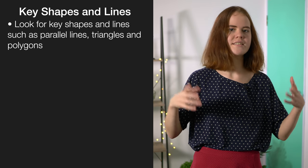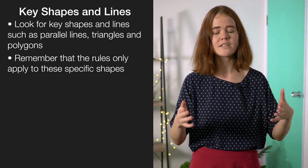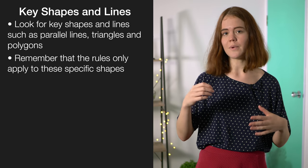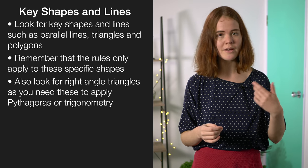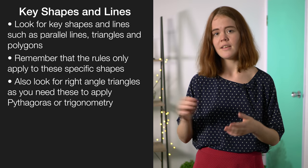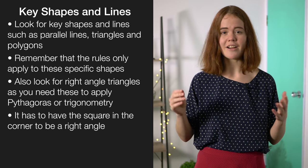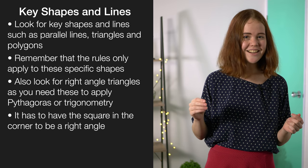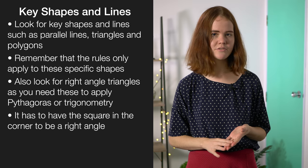As soon as you get into the question, you want to start looking for those key shapes and lines. Are there parallel lines? Is there a triangle? Is there a polygon? Remember that the rules you've learned only apply to these specific shapes, so once you've identified them you'll get a clearer picture of how to proceed. One really specific case of this is to look for right angle triangles, because if you want to use Pythagoras or trig, you're going to need a right angle triangle. Remember the little square in the corner means it's a right angle — just because something looks like a right angle doesn't mean it is, so make sure you're absolutely sure before you start applying those rules.